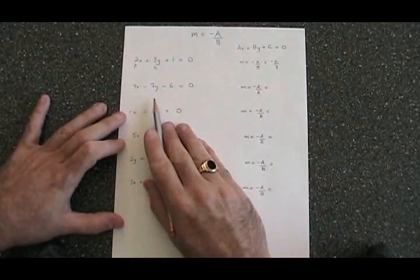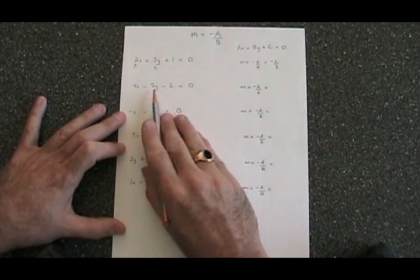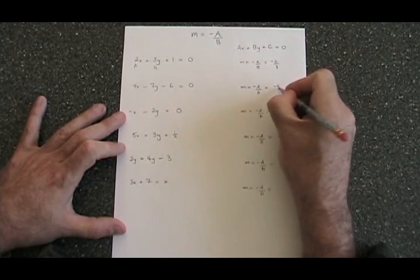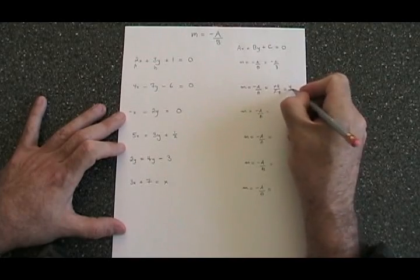The second line is already in the form ax plus by plus c equals 0. The a is 4, the b is negative 7. So negative a over b becomes negative 4 over negative 7. The two negative signs cancel, and our slope is 4 sevenths.